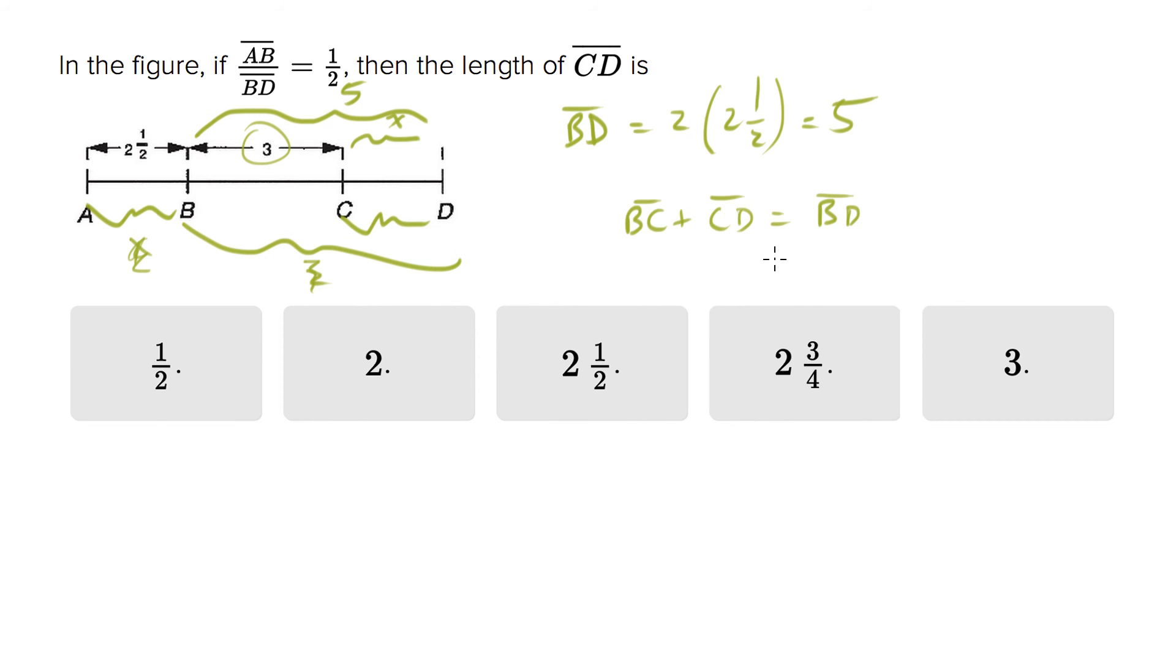But we know two of those. We know BC is 3. We don't know CD, that's our X. And we know BD is 5. So X, therefore, is 2, which is CD.